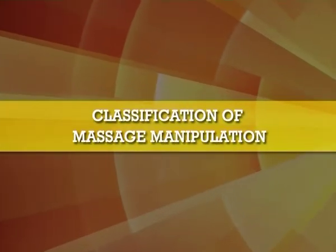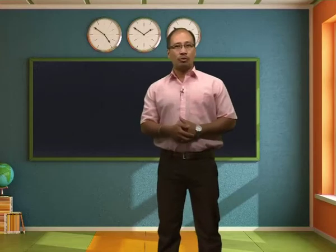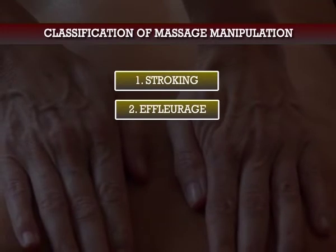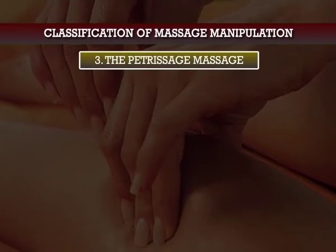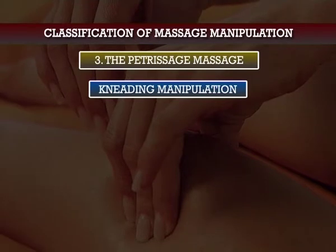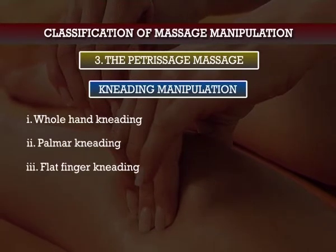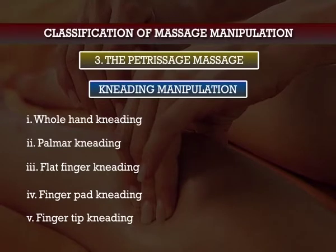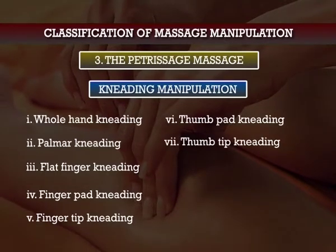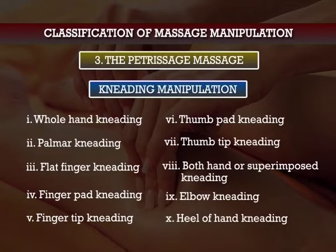Here comes the classification of massage manipulations. The massage manipulations can be classified into: number one, stroking; number two, effleurage — in which we have light effleurage and deep effleurage; number three, petrissage massage — in which we have kneading manipulations, including whole hand kneading, palmar kneading, flat finger kneading, finger pad kneading, fingertip kneading, thumb pad kneading, thumb tip kneading, both-hand or superimposed kneading, elbow kneading, and heel of hand kneading.